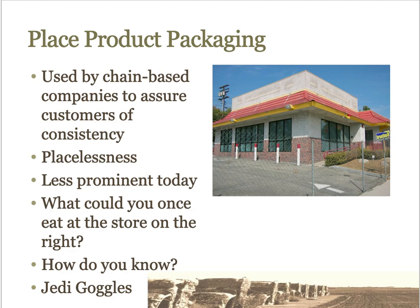Many chain stores use what geographer John Jakle calls place product packaging to help sell goods and services. The goal is to attract customers to visit chain or franchise stores repeatedly by using the architecture and landscape of the store itself. Chain restaurants started this practice first in the 1950s. Based on the architecture of the store shown, it looks like a McDonald's — identifiable by using your observational skills.